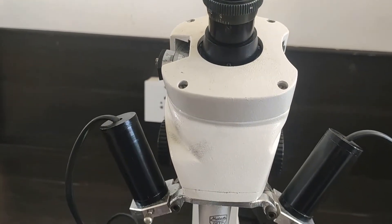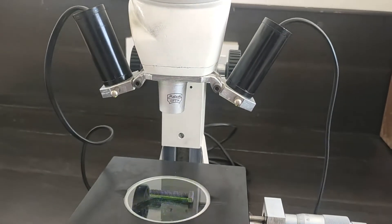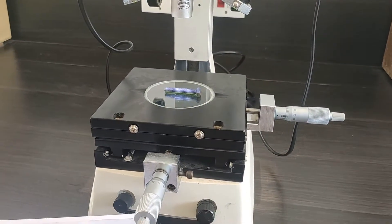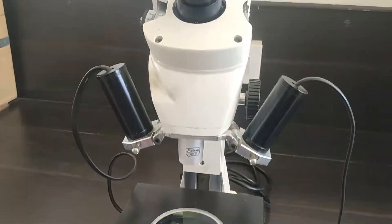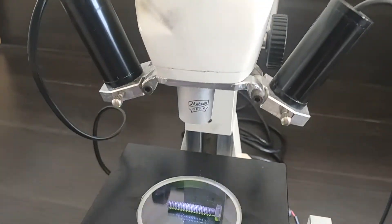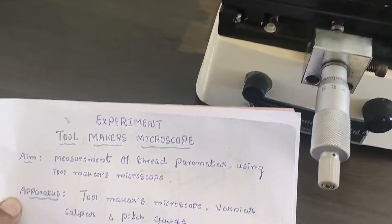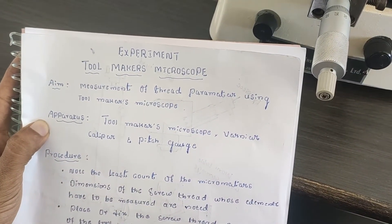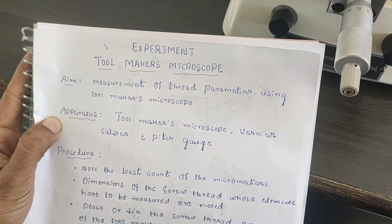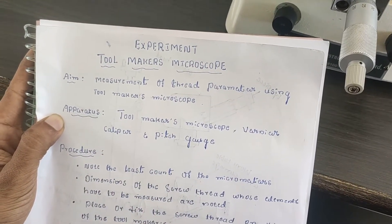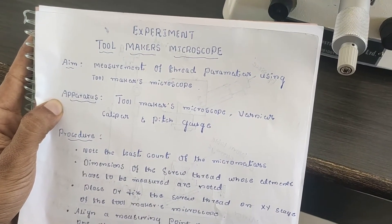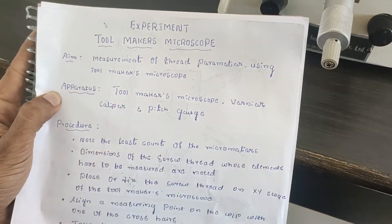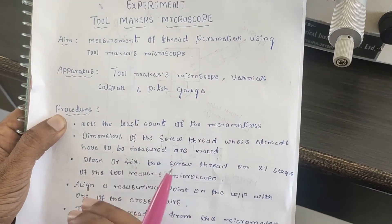Today I am going to explain one of the experiments — the tool maker's microscope. The main aim of this experiment is measurement of thread parameters using the tool maker's microscope. We are going to measure thread parameters such as major diameter, minor diameter, pitch, and thread angle.